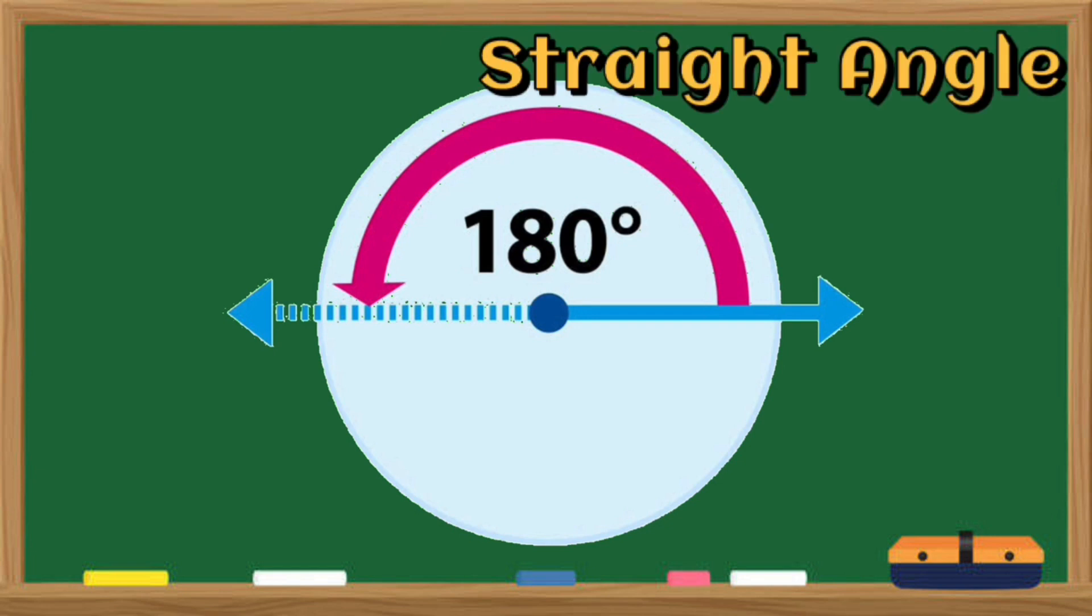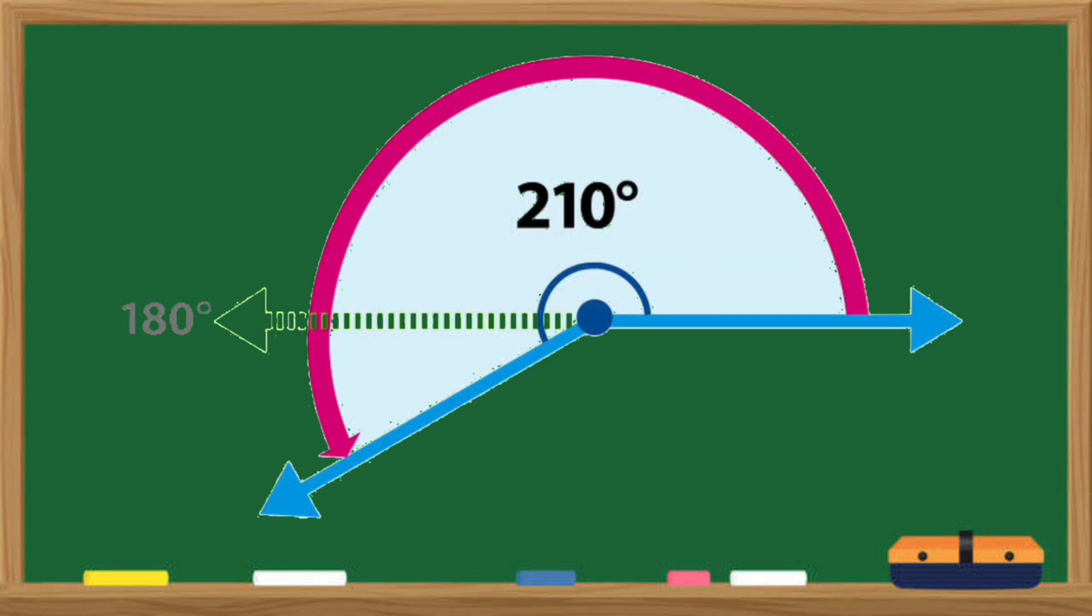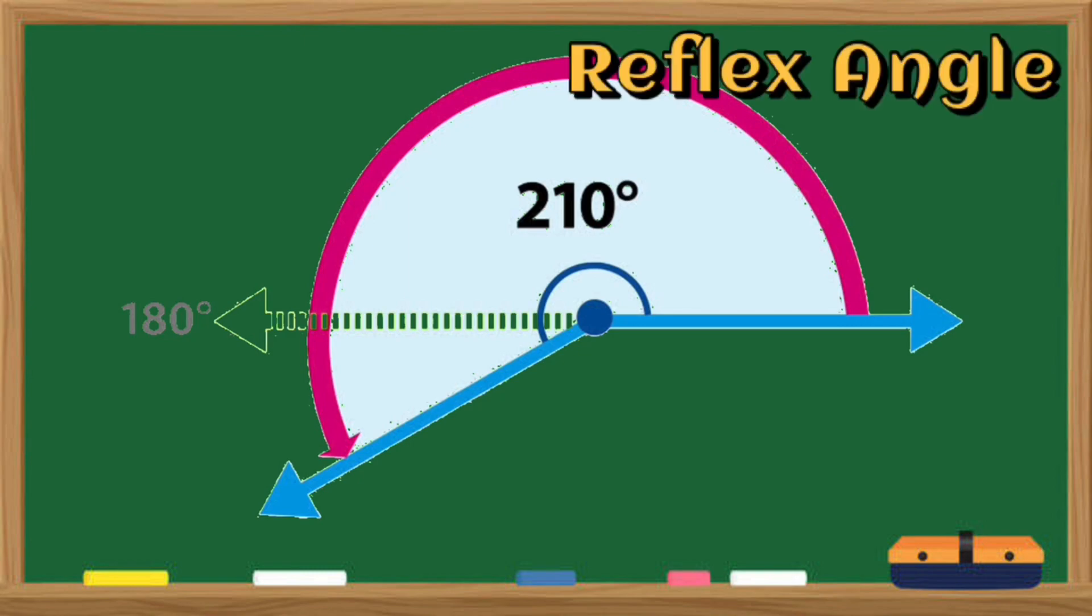An angle whose measure is exactly 180 degrees, we call it as a straight angle. And an angle whose measure is greater than 180 degrees, we call it as a reflex angle.